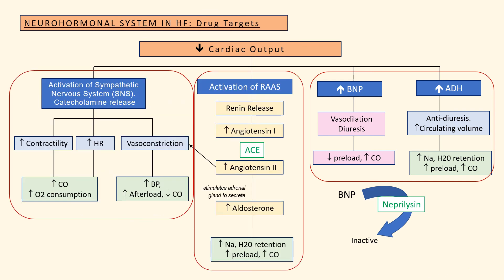So we've now seen how heart failure and decreased cardiac output activates the neurohormonal system. At first, the compensatory mechanisms of increasing blood pressure and fluid retention are helpful. However, with time, these effects become detrimental and worsen heart failure. We can use drugs such as beta blockers to inhibit the sympathetic nervous system, and ACE inhibitors, ARBs, and mineralocorticoid receptor antagonists to block the RAS system.